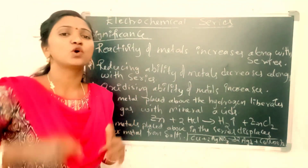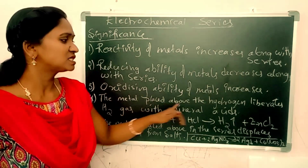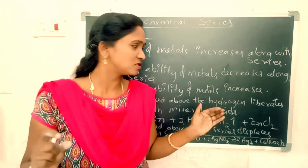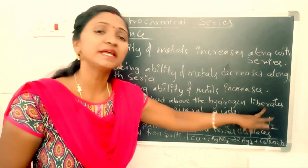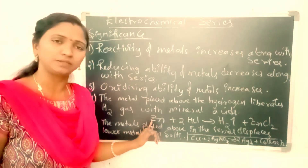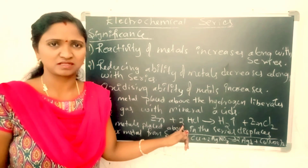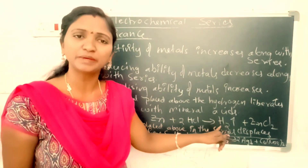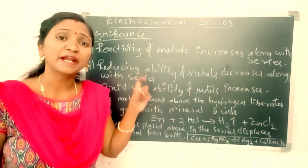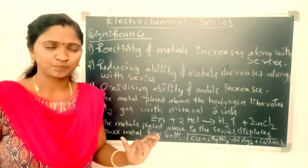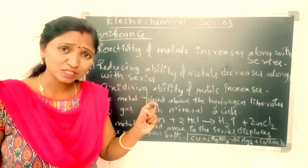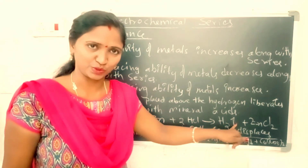Fourth significance: the metals placed above hydrogen in the electrochemical series liberate hydrogen gas when they react with mineral acids. For example, zinc is placed above hydrogen, so zinc reacts with mineral acids and liberates hydrogen gas.